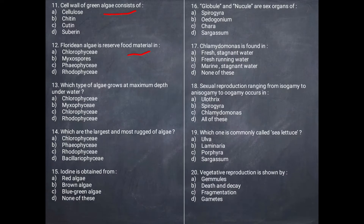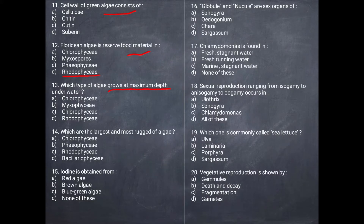Next question: Floridian starch is the reserved food material in which algae? It is the reserved food material in red algae. Red algae we call Rhodophyceae, so the correct answer is D, Rhodophyceae. Next, which type of algae grows at maximum depth under water? We get red algae at maximum depth, so the correct answer is D, Rhodophyceae.